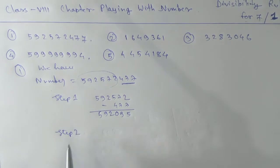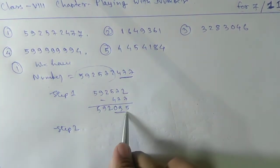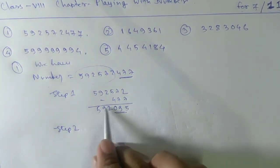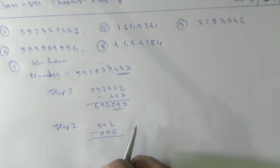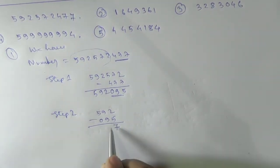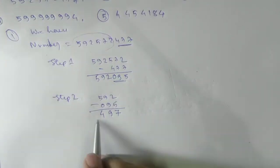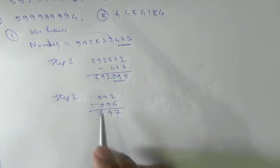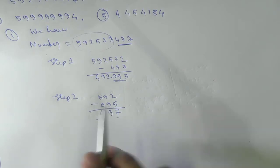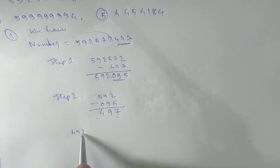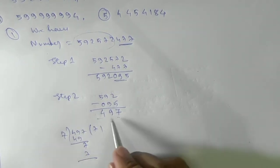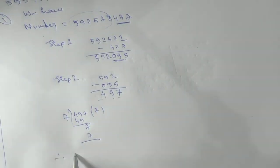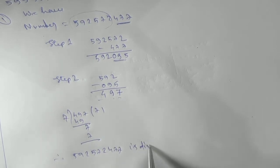Next step: again take the last 3 digits of 592095, which is 095, and subtract from the remaining part 592. So 592 minus 095 gives us 497. This is a 3-digit number, so now we check if 497 is divisible by 7. Yes — 7 times 71 equals 497. Therefore 592572477 is divisible by 7.